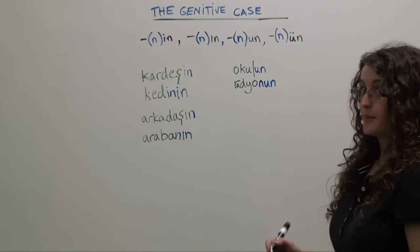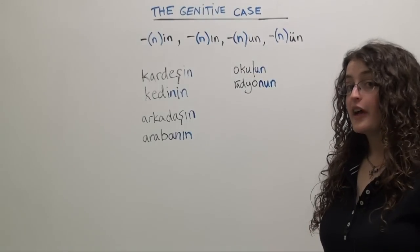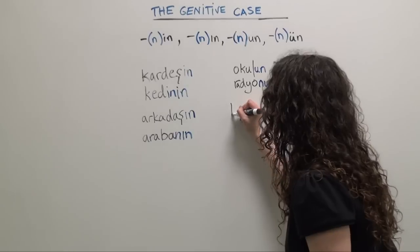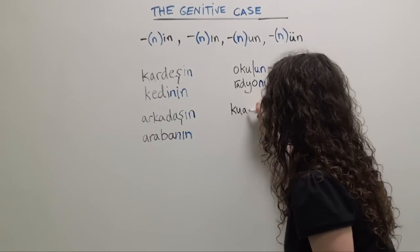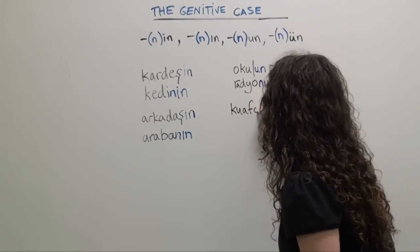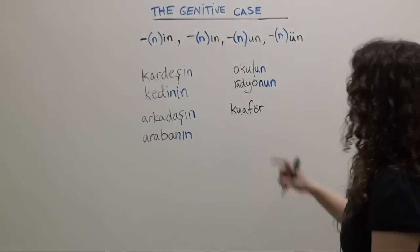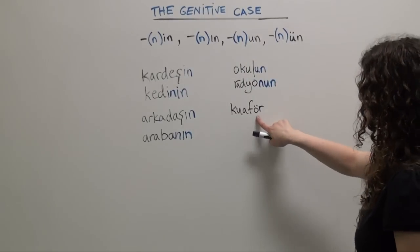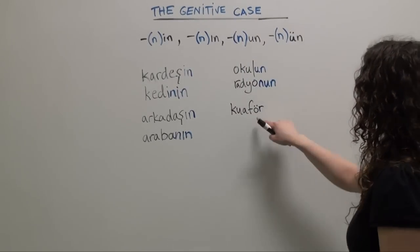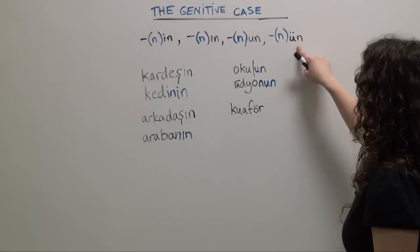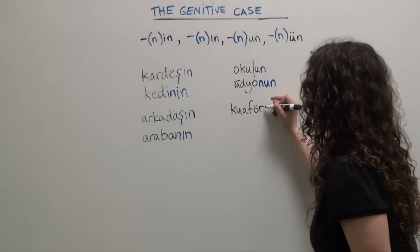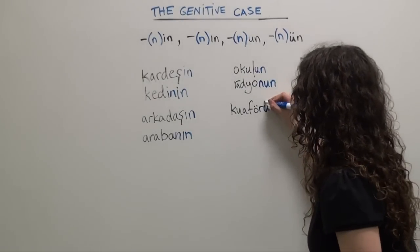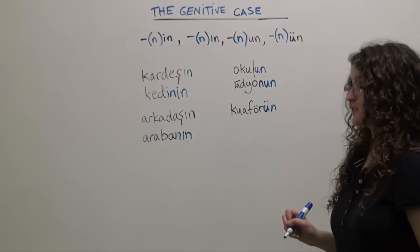Another example: let's say we want to say 'of the hairdresser.' The Turkish word for hairdresser is kuaför. We're going to choose the version of the genitive case ending that corresponds best with the final vowel in kuaför, giving us kuaförün — 'of the hairdresser.'